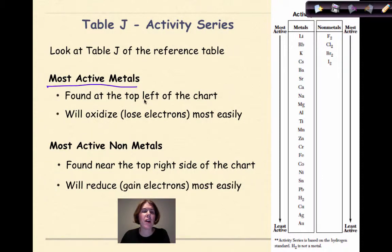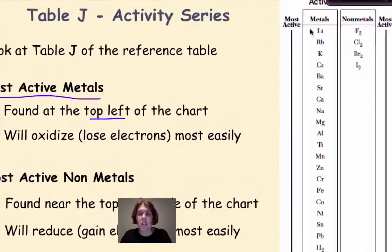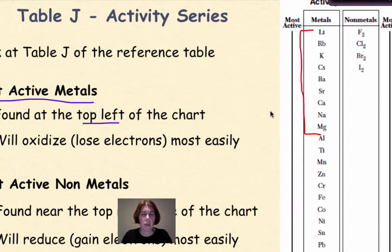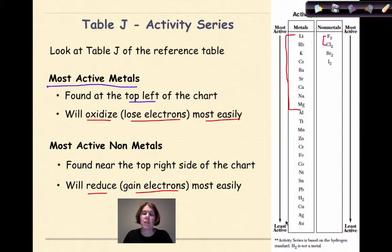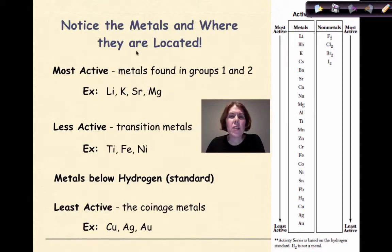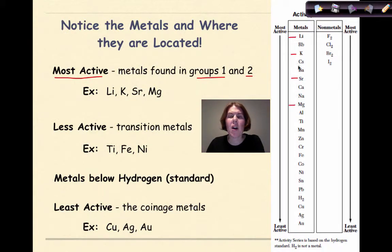We're going to find that the most active metals are found at the top left of the chart. These metals up here are going to be our most active ones, and they will oxidize or lose their electrons most easily. Your most active nonmetals are found near the top right side of the chart. Nonmetals will reduce or gain electrons most easily. So here we have our most active metals at the top and our least active metals at the bottom, and then only really four identified nonmetals that we might see in a single replacement reaction.